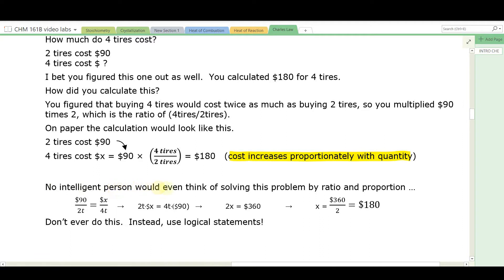Very simple. It's the way you would do it when you're not at school. Now, no intelligent person would even think of solving a problem by the method of ratio and proportion. Here it is. $90 over 2t equals X dollars over 4t. Now, we rearrange. This is what you're taught in school, right? Forget what you're taught in school. Then, say that 2t times X dollars is 4t times $90. The units don't make any sense. Let's drop them out. That's what you do. Then, we'll say 2x equals 4 times 9 is 360. X is equal to 360 divided by 2. X is equal to $180. You would never do that. You would not do that when you go to buy tires. You would not take out a piece of paper and do a ratio and proportion. Don't ever do this. Don't do it in school either. Instead, use logical statements. You understand the problem. You'll get it right.